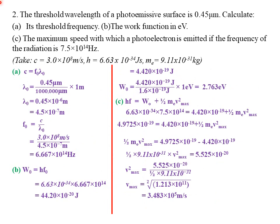Our second example states: the threshold wavelength of a photoemissive surface is 0.45 micrometers. Part (a): calculate the threshold frequency. The threshold wavelength corresponds to both the threshold frequency and the work function. Given: speed of light c = 3.0 × 10⁸ m/s. Using v = fλ, where f is the threshold frequency and λ₀ is the threshold wavelength — but first we must convert 0.45 μm into meters.